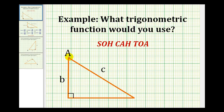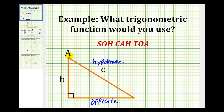This is angle A, and this would be the side opposite angle A. The hypotenuse is always opposite the right angle, so side C would be the hypotenuse. Side B is one of the sides that forms angle A but is not the hypotenuse, so this would be the adjacent side.